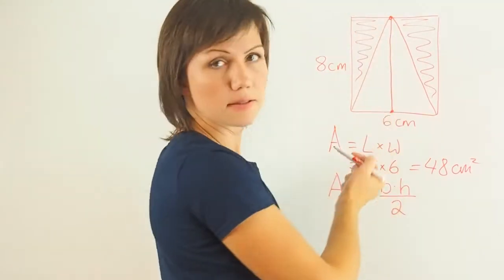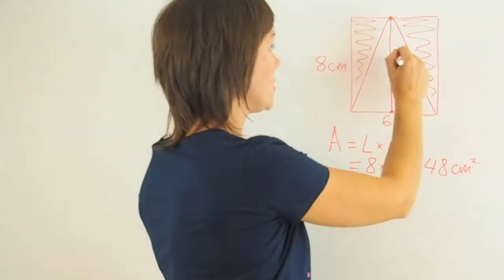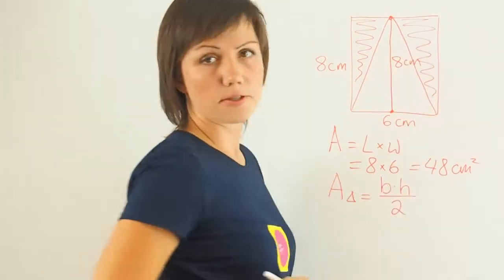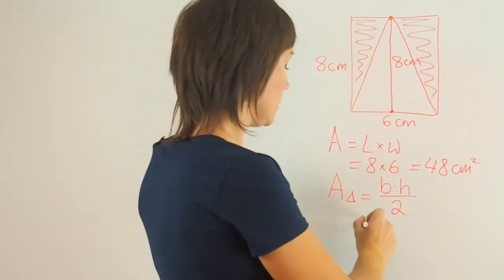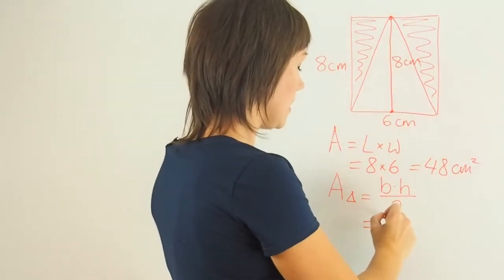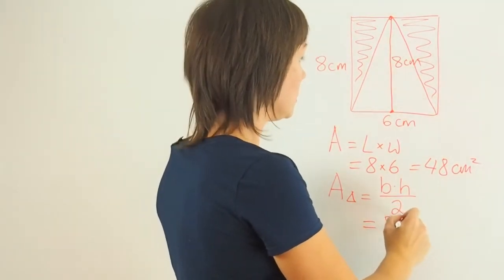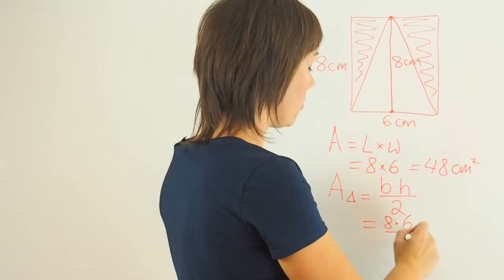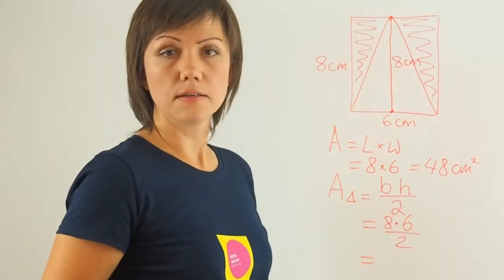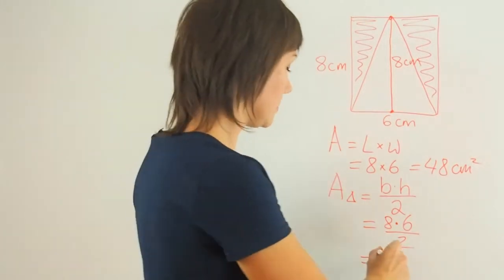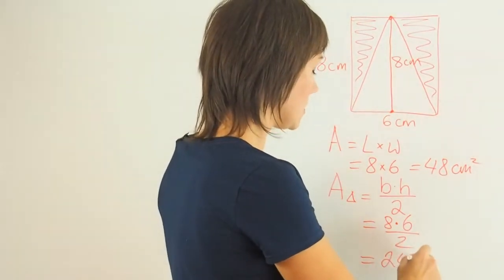But I know that the height of this triangle is the same as the length of the rectangle, which is 8 centimeters. So I can incorporate that into my formula and get 8 times 6 over 2, which is 24. 24 centimeters squared.